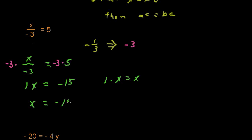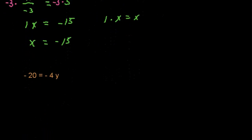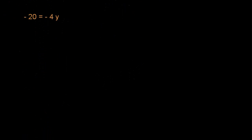Is this truly a solution to our problem? Let's just plug in: negative 15 divided by negative 3 is indeed 5. So x equals negative 15 was the solution.